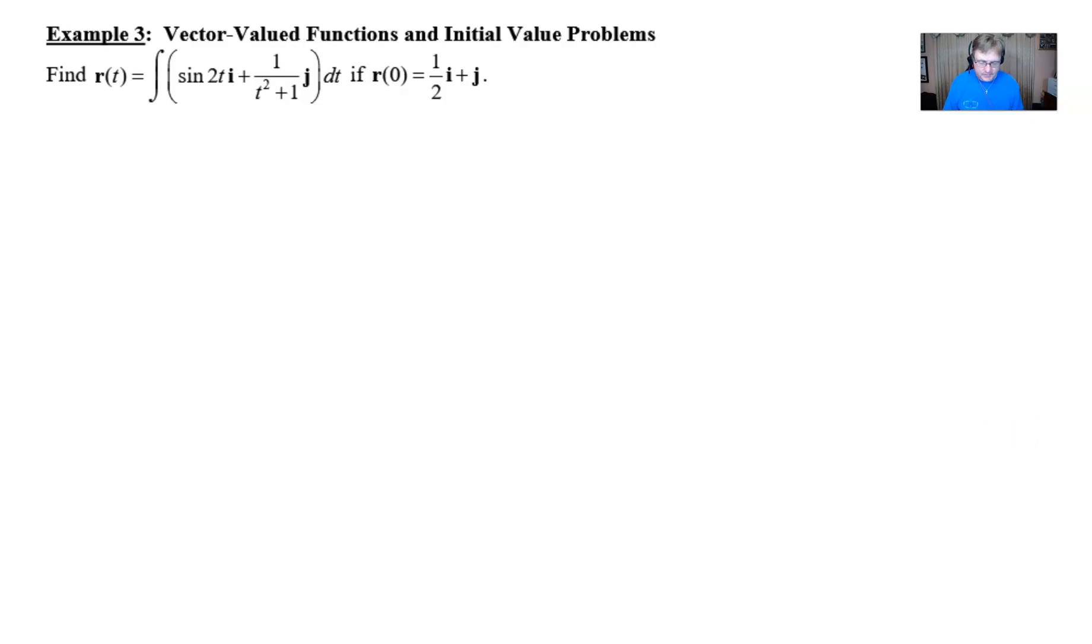So here is our example number 3. You're given the fact that you're supposed to find r of t, which is the antiderivative or the integral of the sine of 2t i plus 1 over t squared plus 1 j. Now you're also given the fact that r of 0, the vector r evaluated at 0, is 1 half i plus 1j.